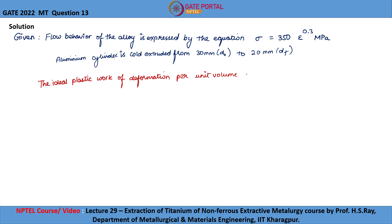The ideal plastic work of deformation per unit volume is given by the formula up equals integral sigma d epsilon. For solving this, we need to find the true strain that the material has undergone when cold extruded from 30 mm to 20 mm.